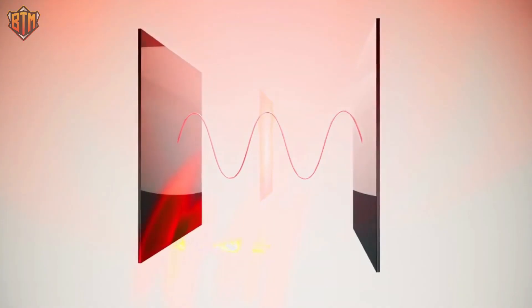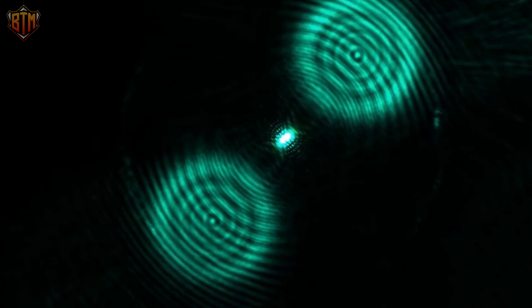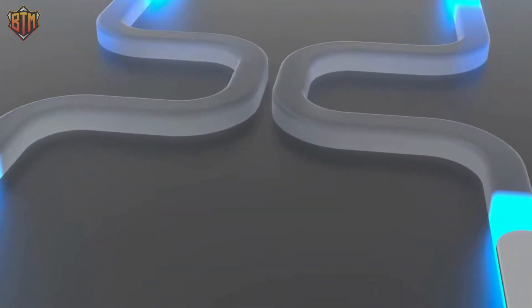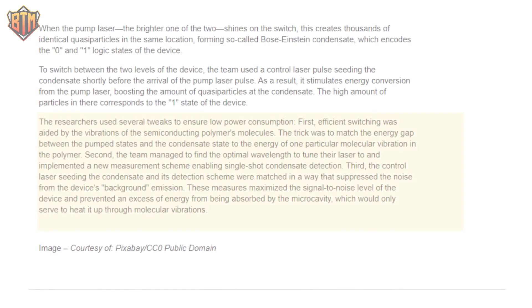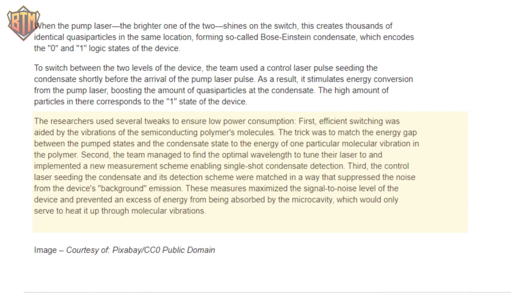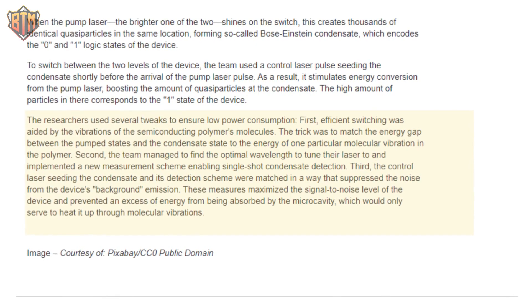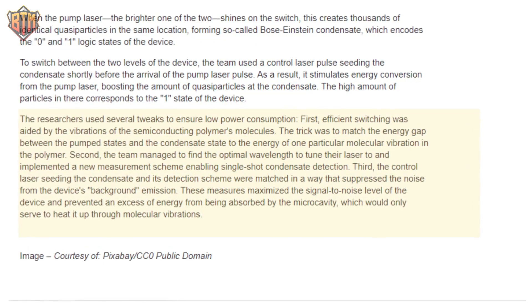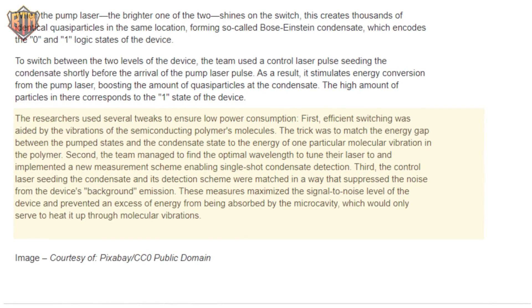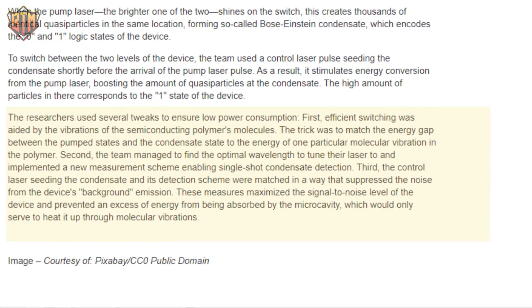The research team used the controlled laser pulse to alternate between the two levels of the device, seeding the condensate just before the laser pulse from the pump arrived. The energy conversion from the pump laser is stimulated, increasing the number of quasiparticles in the condensate. The device's single state corresponds to the area's high particle concentration. To ensure minimal power usage, the researchers made several adjustments. The semiconducting polymer molecules' vibration helped the first practical switching. The challenge was to match the energy of one specific molecular vibration in the polymer to the energy gap between the pump and condensate states.